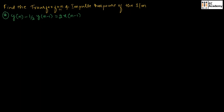Let us consider the first difference equation where y(n) minus 1/2 y(n-1) is equal to 2x(n-1). For this, we need to find the transfer function as well as the impulse response. For this given equation, let us take Z-transform on both sides.